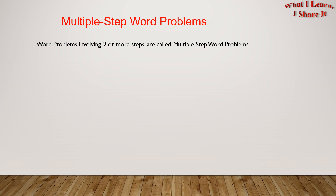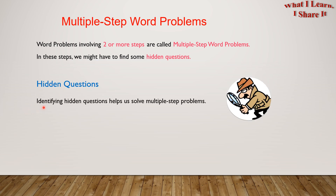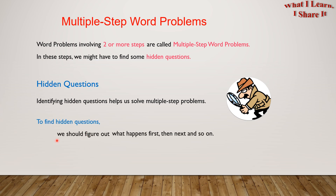Multiple-step word problems. Word problems involving two or more steps are called multiple-step word problems. In these steps we might have to find some hidden questions. Hidden questions. Identifying hidden questions helps us solve multiple-step problems. To find hidden questions we should figure out what happens first, then next, and so on.